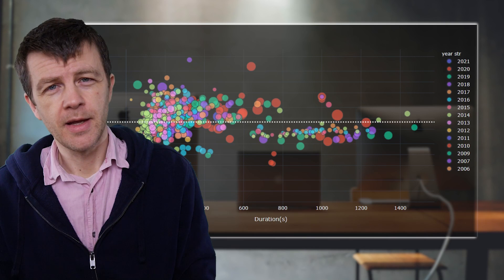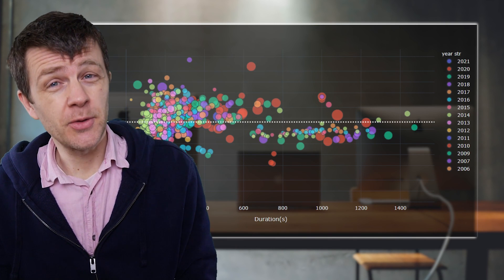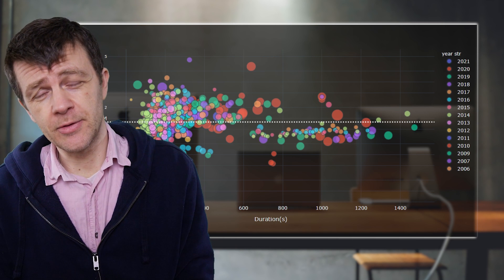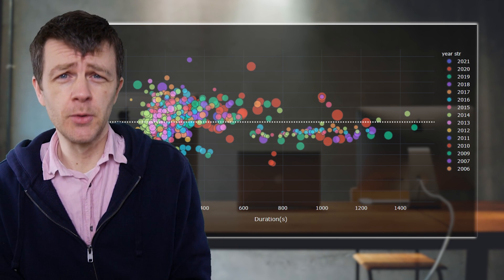And this is what I found. This is a scatter plot that represents all of the publicly available videos on Tom's channel at the time of recording.